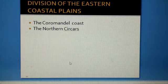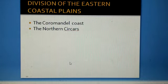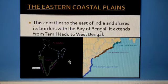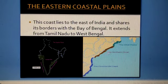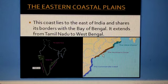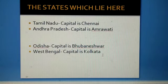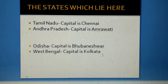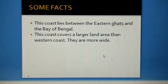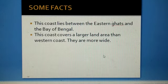The eastern coastal plains are divided into two smaller coasts. The first is the Coromandel coast. This purple line is showing you the Coromandel coast, including Tamil Nadu and Andhra Pradesh. This coast lies between the Eastern Ghats and the Bay of Bengal, and covers a larger land area than the western coast.